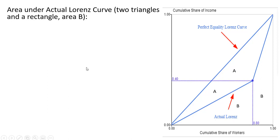So there are three areas we're going to calculate. The first triangle here has dimensions of 0.4 for the height and 0.8 for the base. So 0.4 times 0.8 times one-half gives us 0.16.